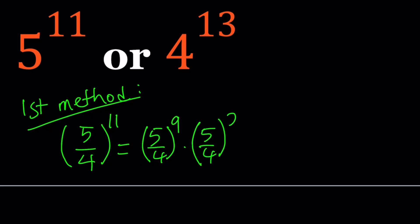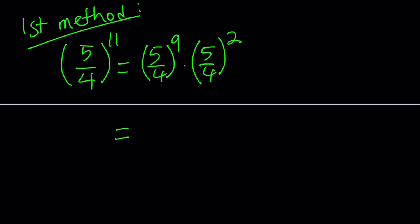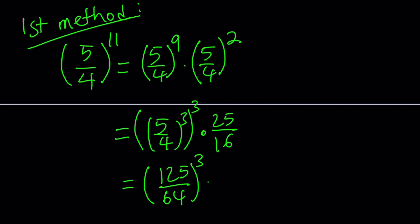So 5 fourths to the power 11, I'm going to write it as 5 fourths to the power 9 times 5 fourths squared. The ninth power I'm going to write as 5 fourths cubed cubed, that makes nine right, times 5 fourths squared is just 25 over 16.